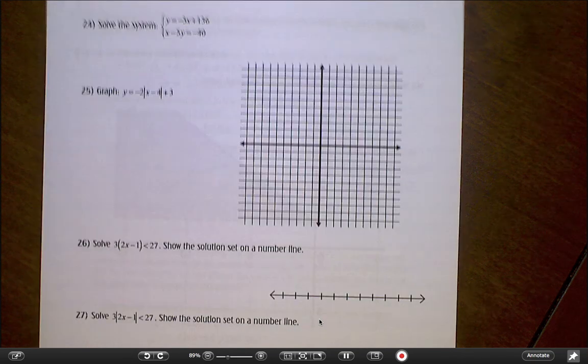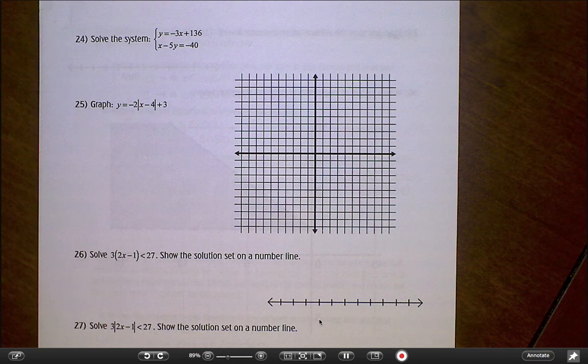Hi everyone, this is the last page of the chapter 5 test review for Algebra 1a. This is looking at systems, inequalities, absolute value—I think that's just about everything that was included in this chapter.